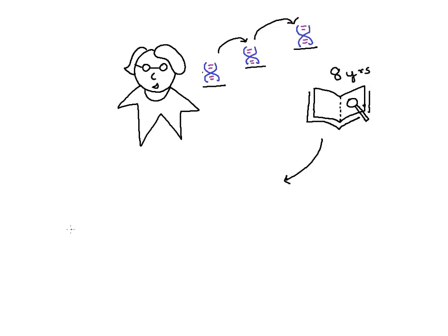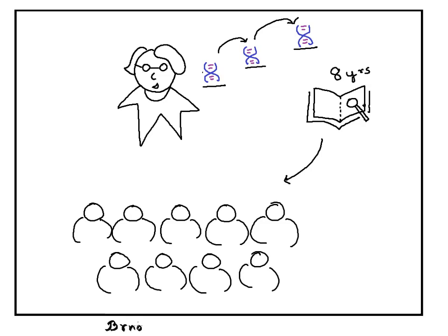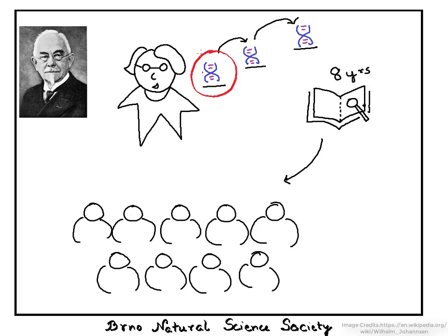This and other such incredible experiments uncovered the idea of discrete particles of inheritance. And after eight years of research, in 1865, Mendel published his findings to a room full of farmers and botanists in Proceedings of Brno Natural Science Society. Mendel had discovered the basic unit of heredity. And finally, a Dutch botanist Wilhelm Johansen in the beginning of the 20th century named this unit the gene.